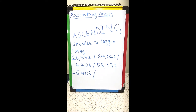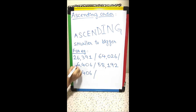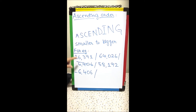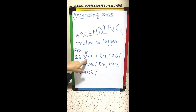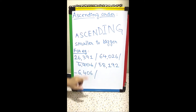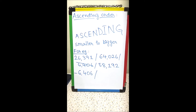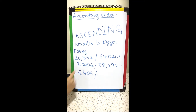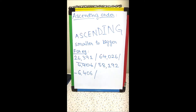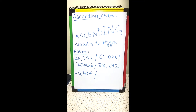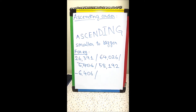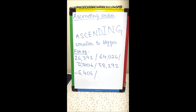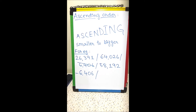The first number is 6406. Cancel it out so that you know we have to arrange only the remaining three numbers. All three remaining numbers are five digit numbers, so we have to start comparing each digit starting from the left.